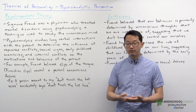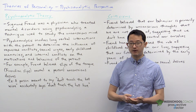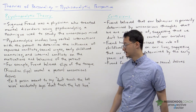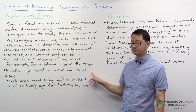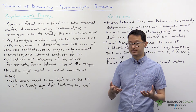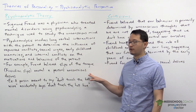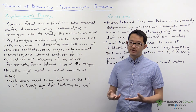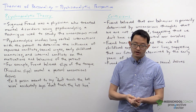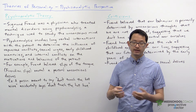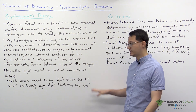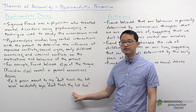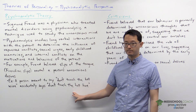Freud really focused on the unconscious mind and how important it was for determining our behaviors. As an example, Freud believed that slips of the tongue — or Freudian slips — often reveal a person's unconscious desires. For instance, let's say you have an employee at a company who is training a new hire.